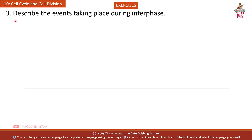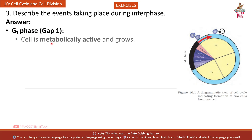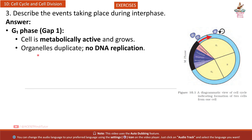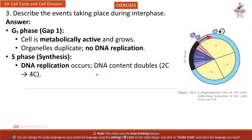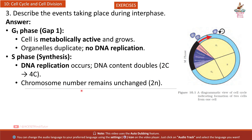Question 3: Describe the events taking place during interphase. G1 phase (Gap 1): Cell is metabolically active and grows; organelles duplicate; no DNA replication. S phase (Synthesis): DNA replication occurs; DNA content doubles from 2C to 4C; chromosome number remains unchanged at 2N.